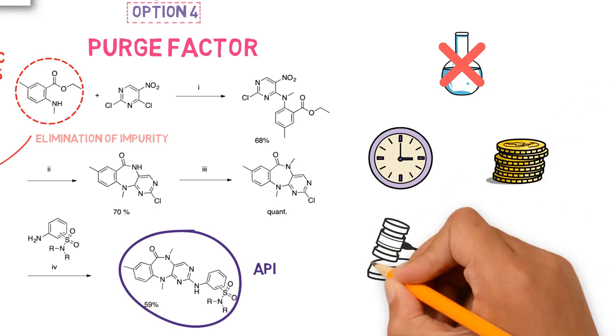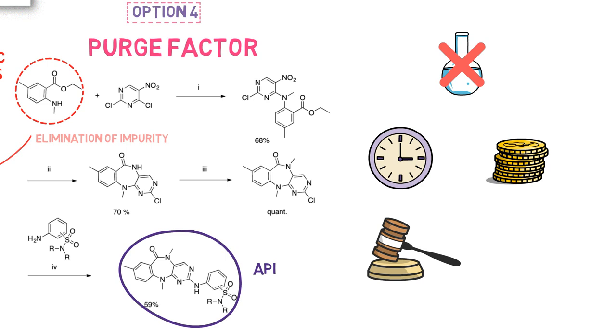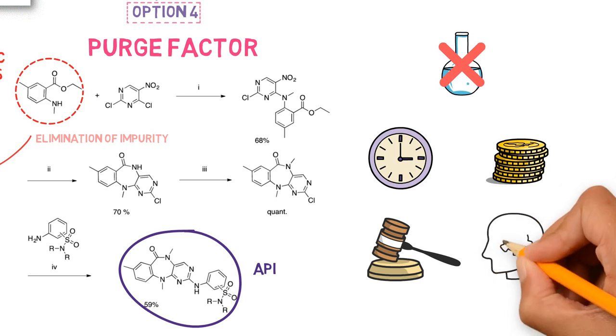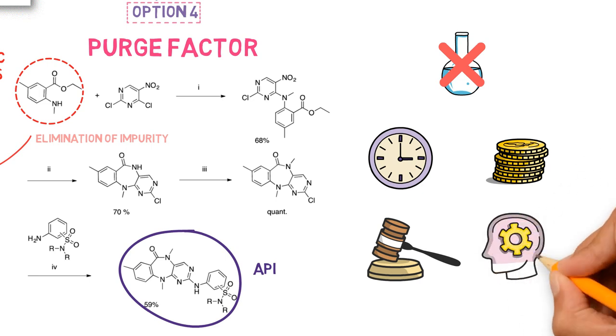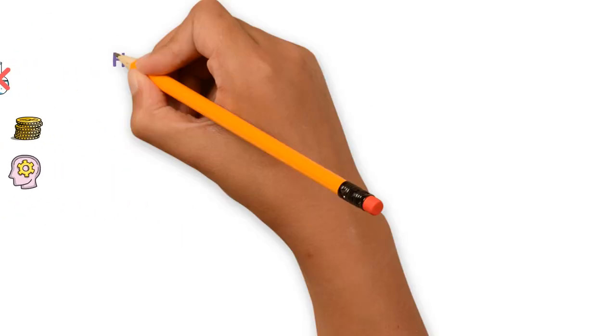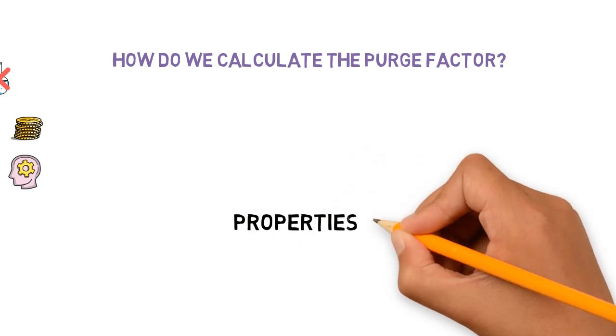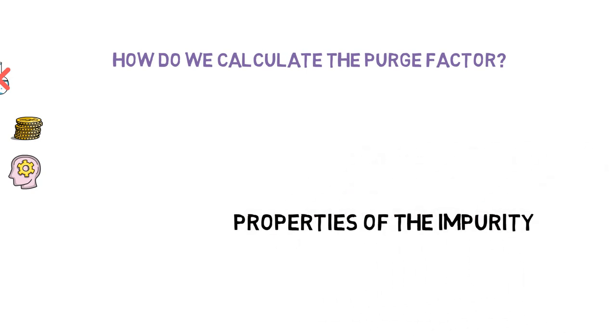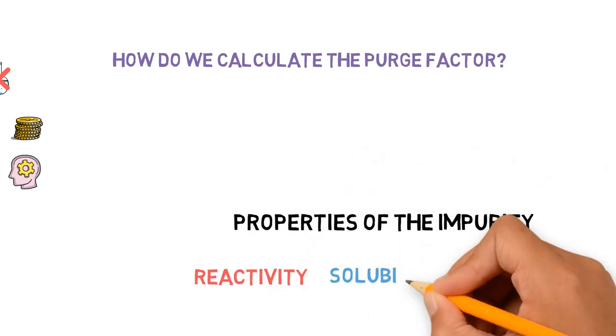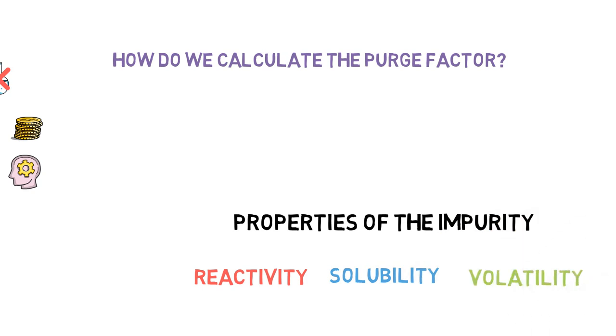The purge factor approach is becoming more and more acceptable by regulators, since it is based on scientific knowledge instead of simply relying on analytical data. And how do we calculate the purge factor? It takes into consideration the properties of the impurity, such as reactivity, solubility, and volatility, and the stages of the manufacturing process.